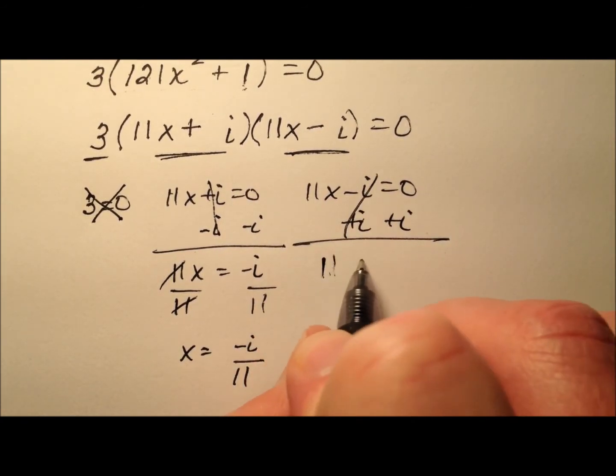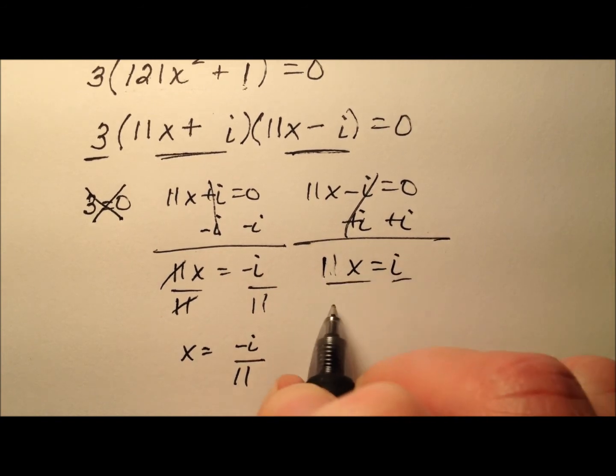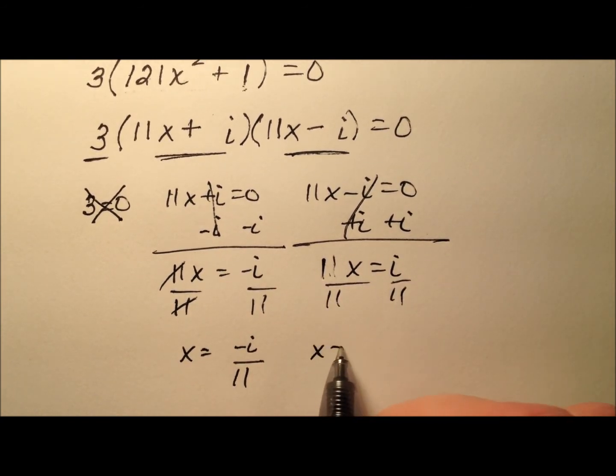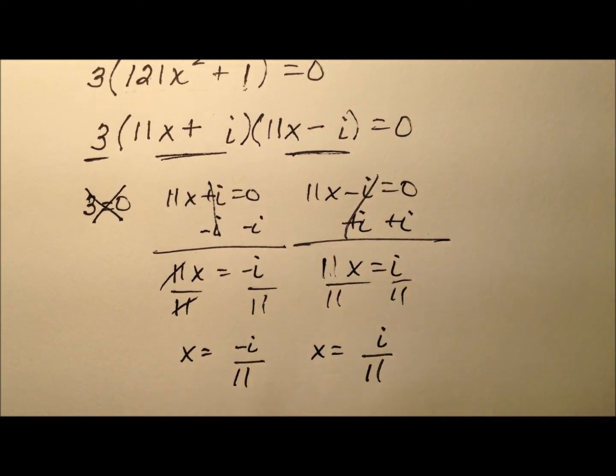And similarly, I can go ahead and add i to both sides here, 11x equals positive i, dividing by 11 will give me i over 11.